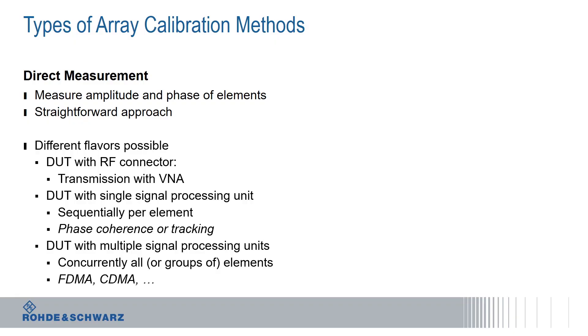If the DUT even has multiple signal processing units, or can somehow apply different signals to different elements, then we can try to use a parallelization of this process to speed up the measurement and remove the need for the phase coherence. Because when two signals are generated at the same point in time, we receive them as the sum of the two signals, and we can somehow discriminate the two signals. This can be used to speed up the process, and we can try to use something like a FDMA or CDMA-like approach, the same as used for multiple access.